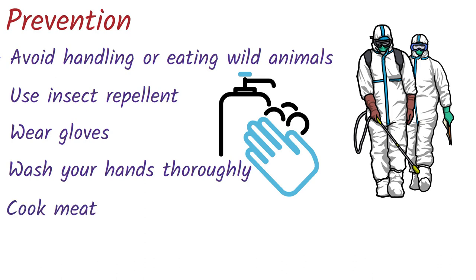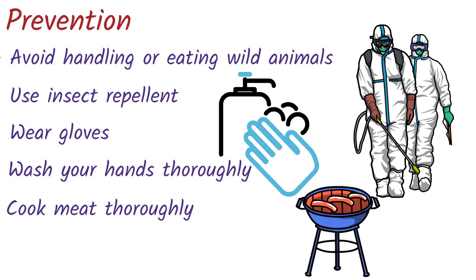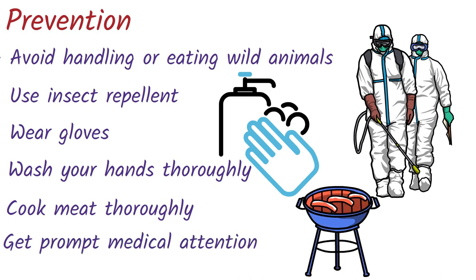Cook meat thoroughly before eating to kill any bacteria that may be present. Get prompt medical attention if you suspect you have been exposed to Tularemia or if you develop symptoms of the disease. By following these precautions, you can reduce your risk of exposure to the bacterium and lower the chances of getting Tularemia. It is also important to stay informed about the disease, especially if you live in an area where Tularemia is common, to be aware of any changes or updates to the recommendations for prevention.